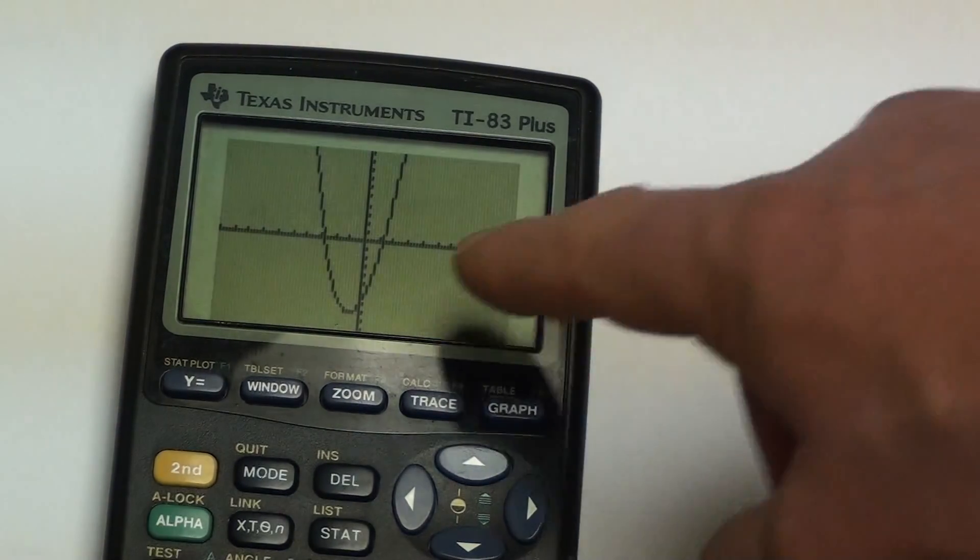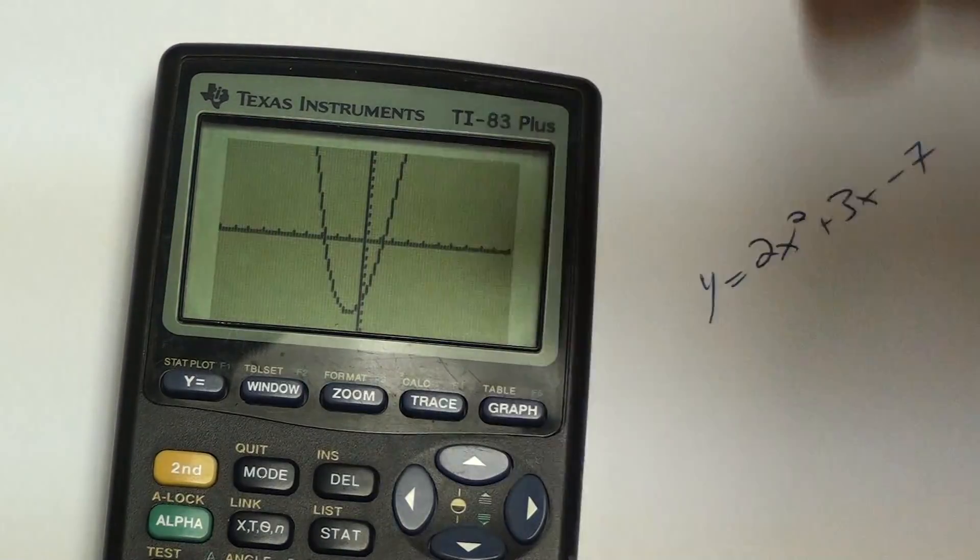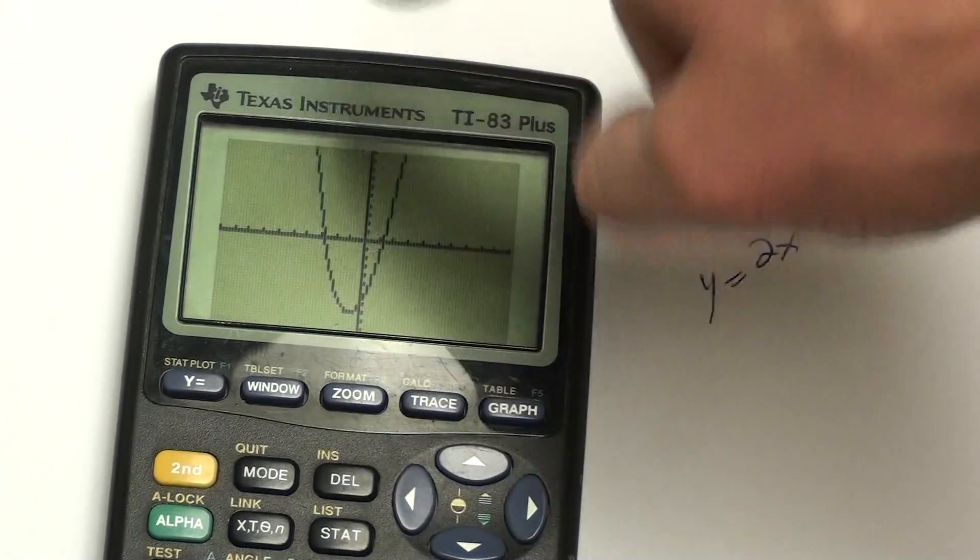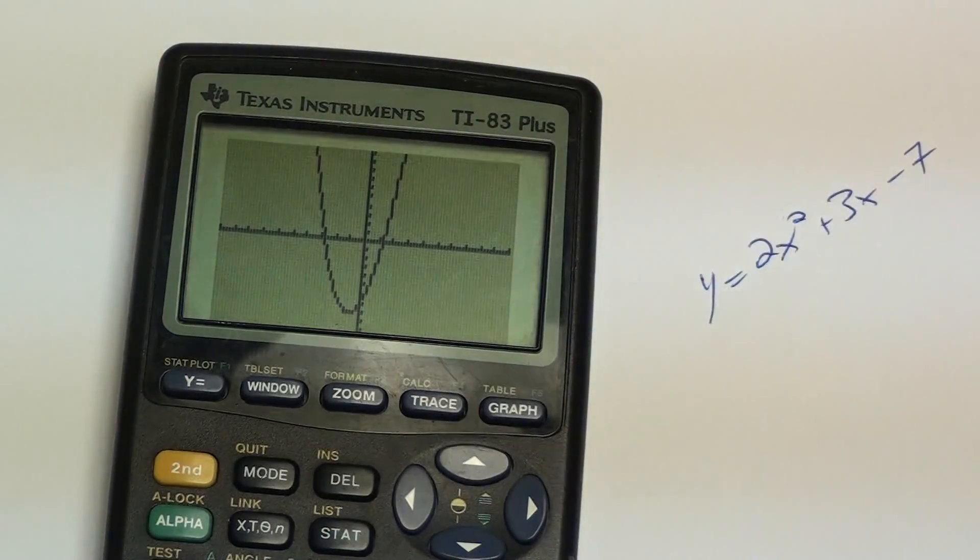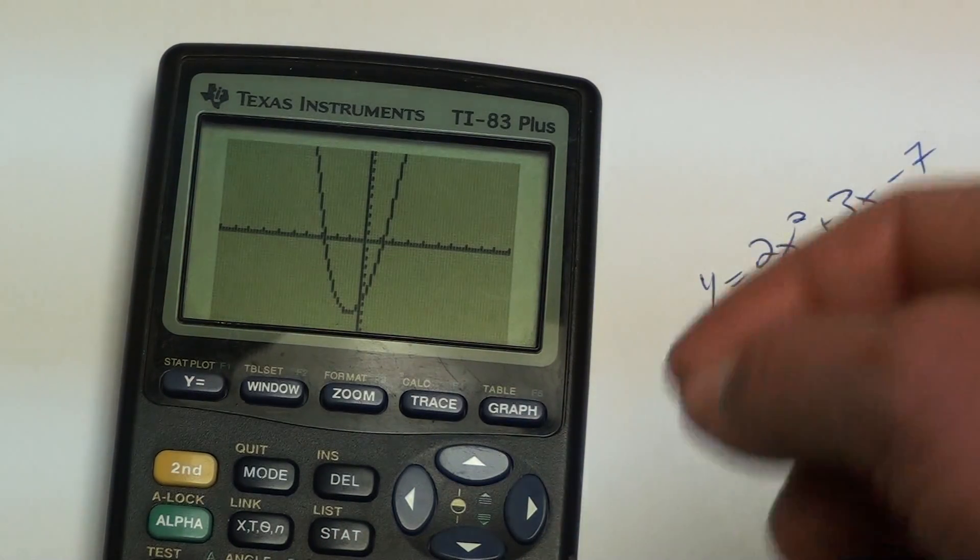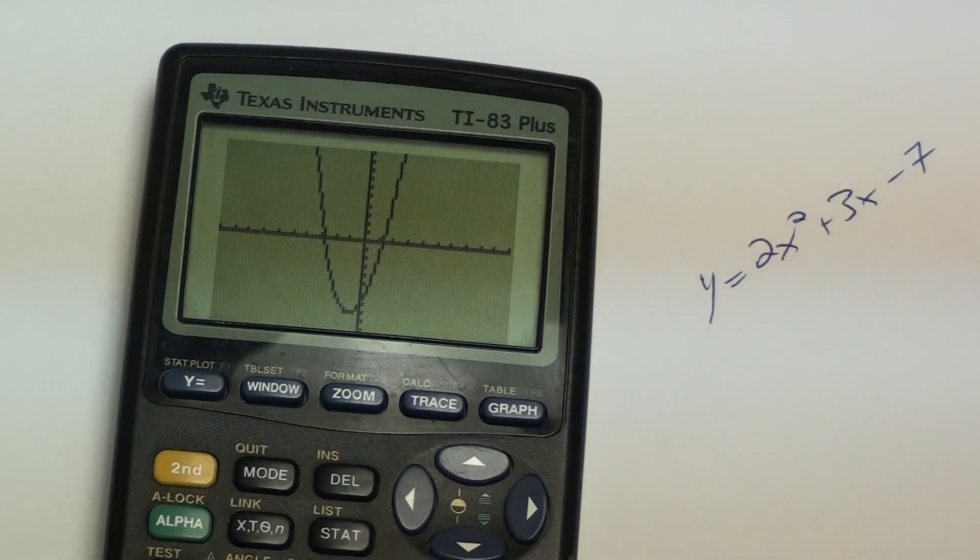But on this graph, negative 10 and positive 10 on the x's and negative 10 and positive 10 on the y's is big enough for me to see my quadratic. So after I've got in here, I need to calculate the x-intercepts, which are also known as the zeros or roots.